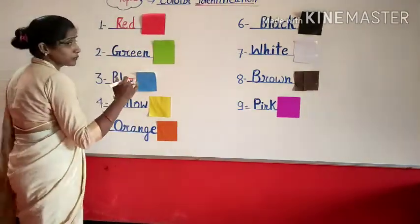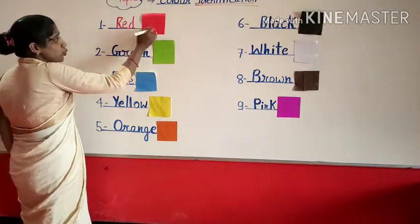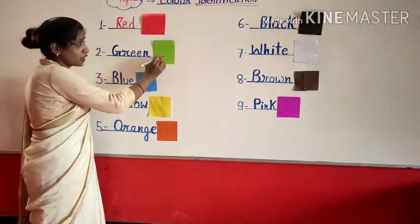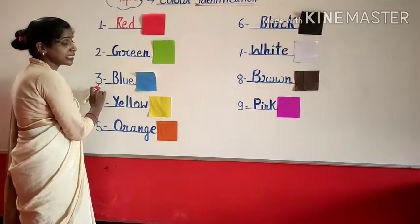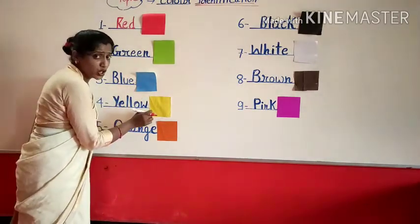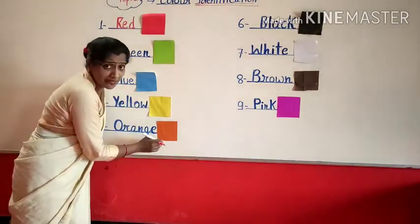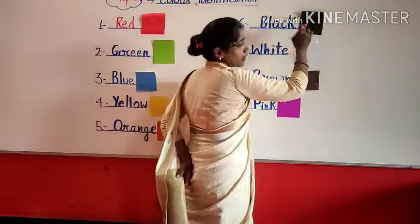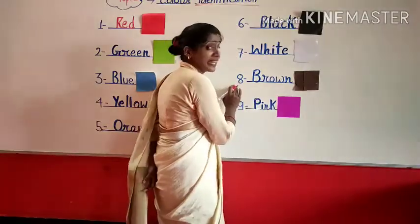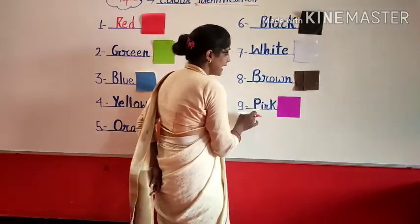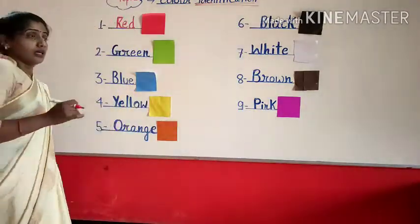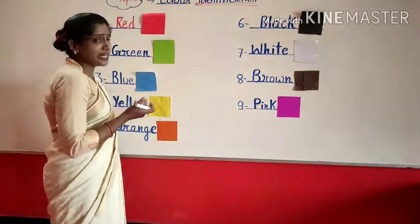Read with me once again and recognize each color. The first color is red, second is green, third is blue, fourth is yellow, fifth is orange, sixth is black, seventh is white, eighth is brown, and ninth is pink. Do you understand all your colors?